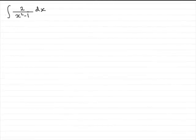Hi, welcome to another example in my series on mixed integration. In this example we've got to integrate 2 over x squared minus 1 with respect to x.